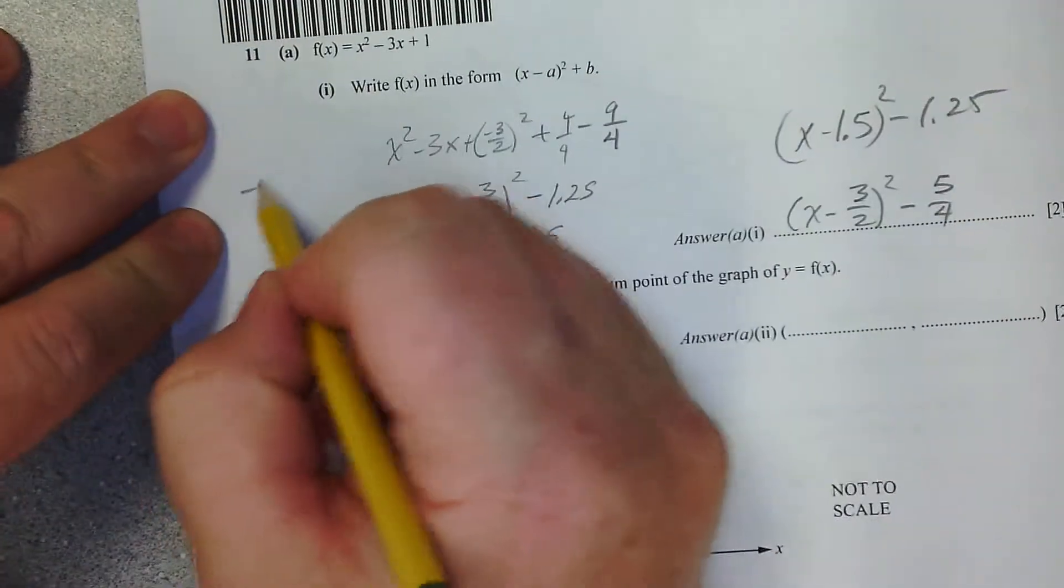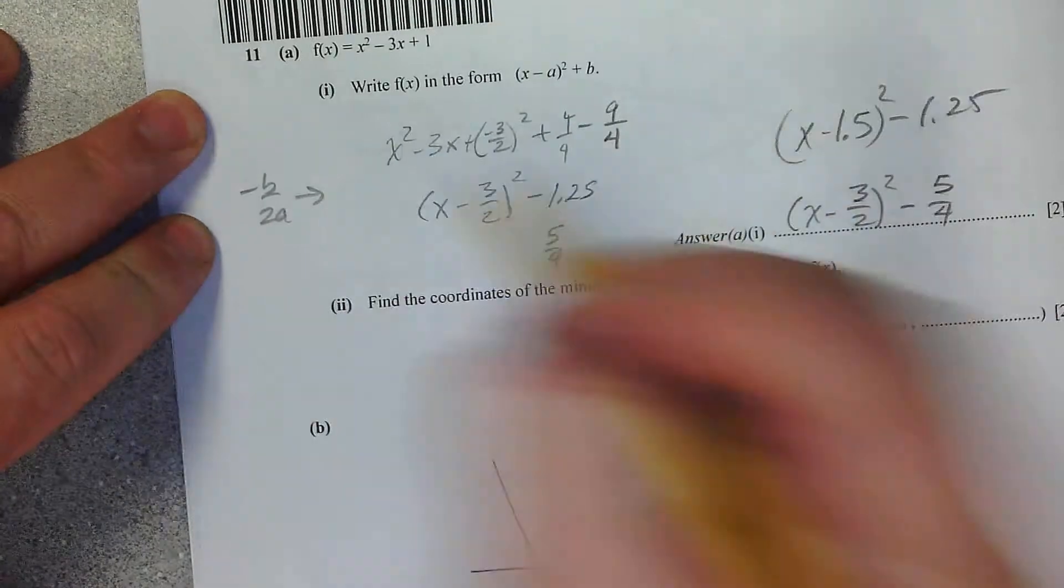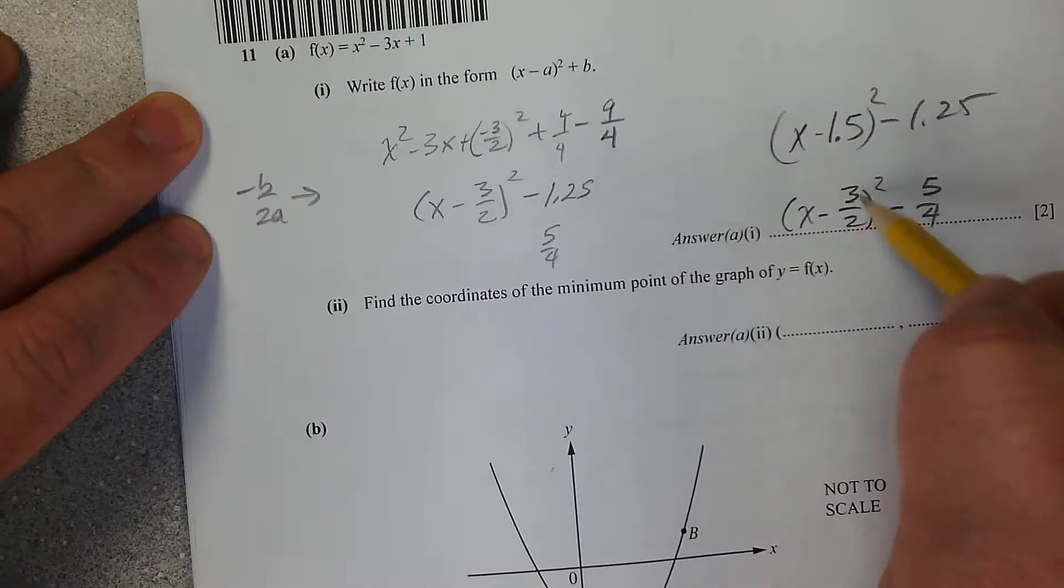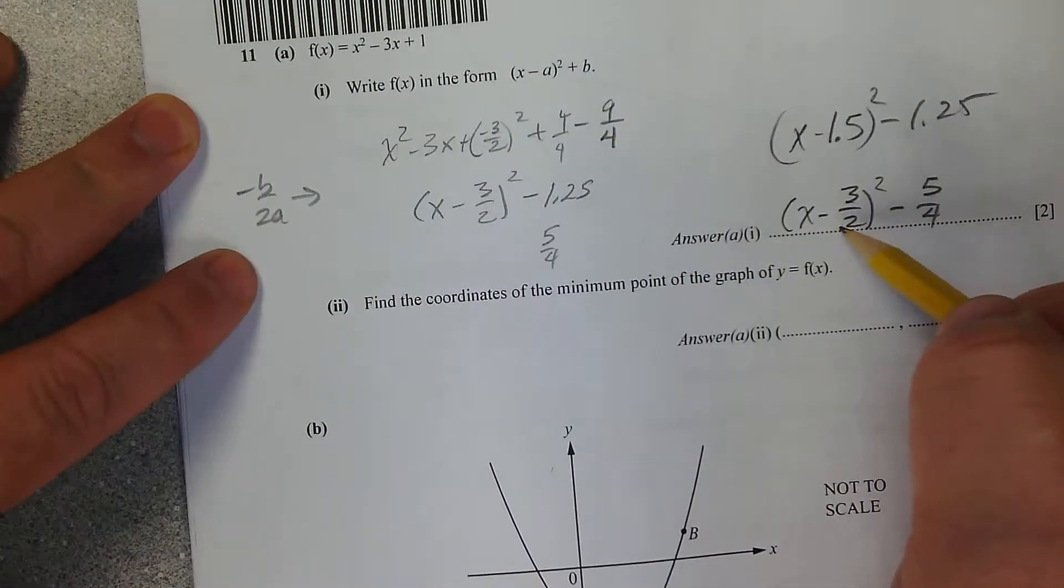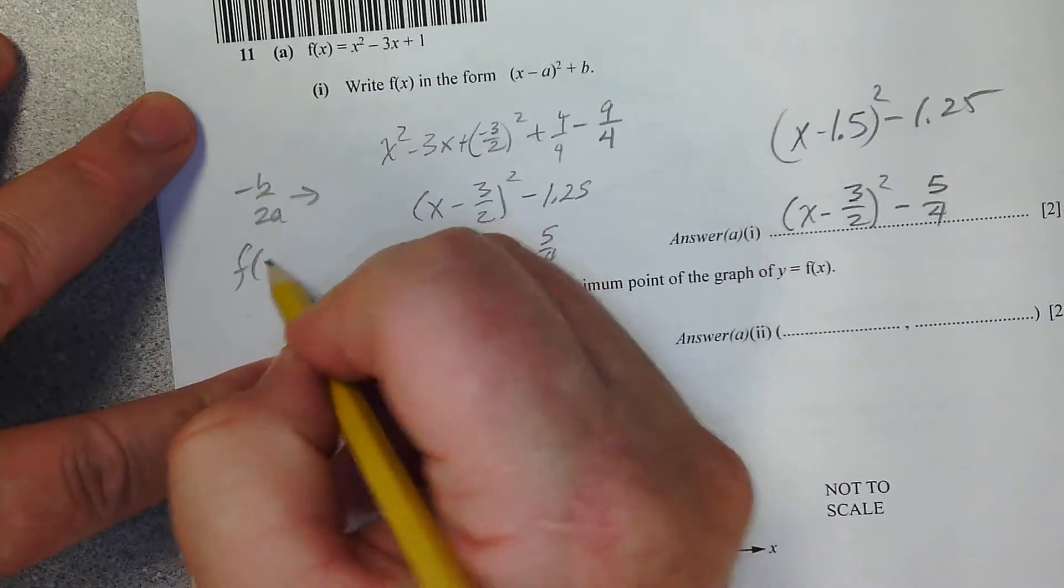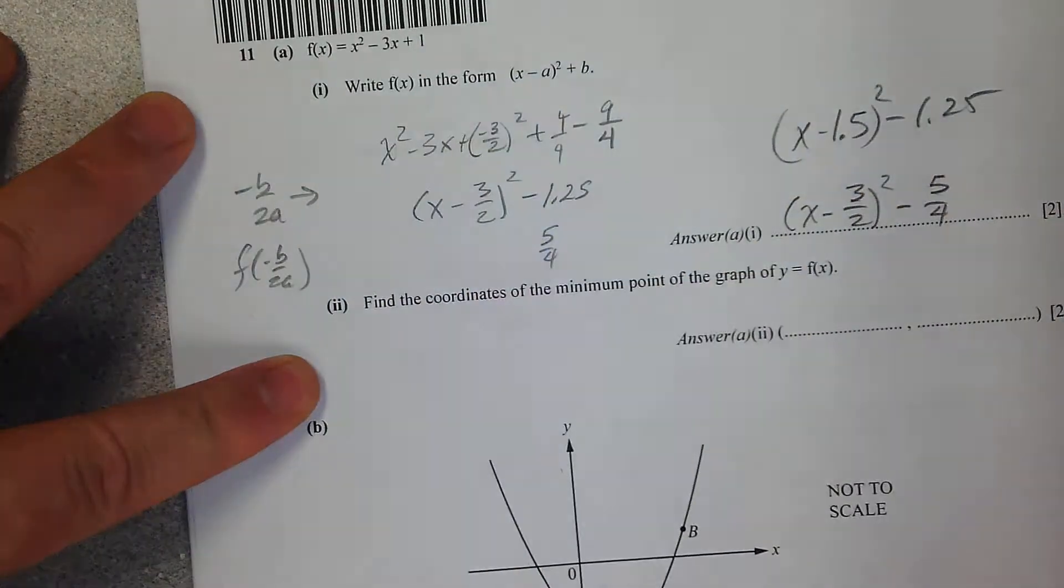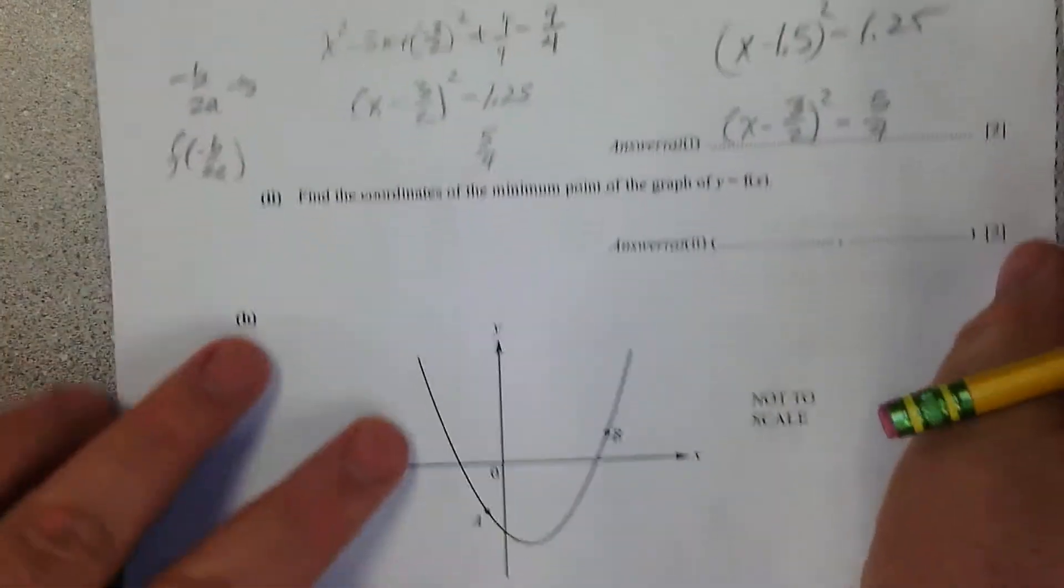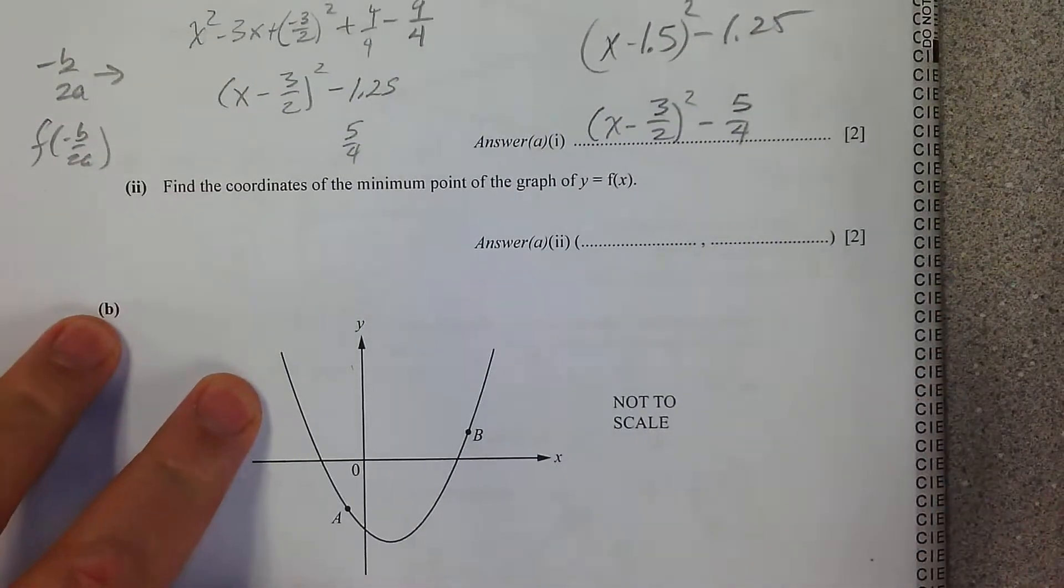Now you could also use the formula. You could do negative b over 2a. That's going to give you the x, that number right there. It'll be the opposite sign, so you'd have to be careful. Then you could take that number, plug it in, and do the math to get the other number. But we did complete the square, which I think is probably better.